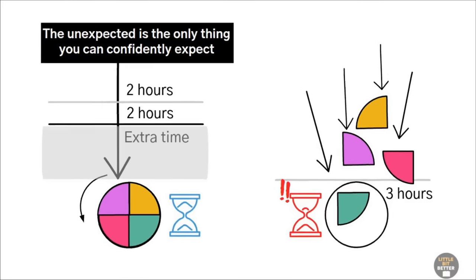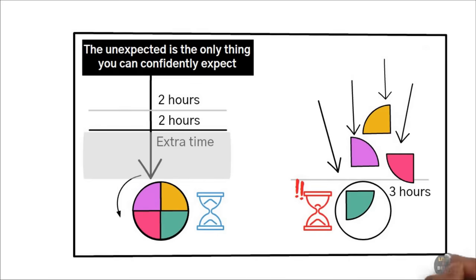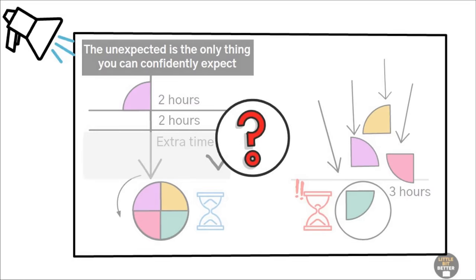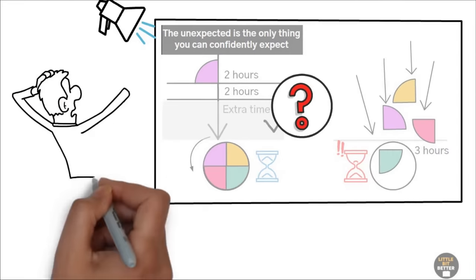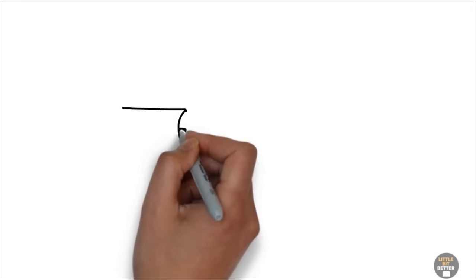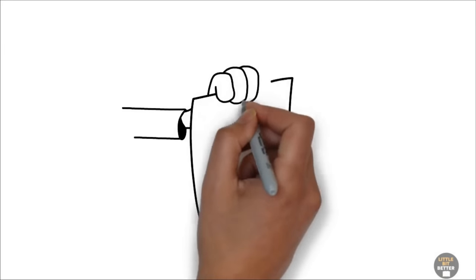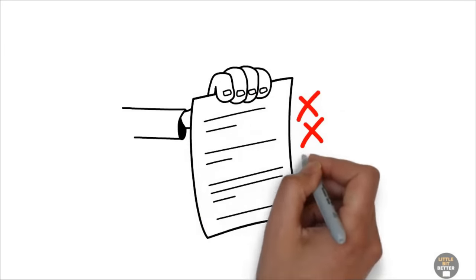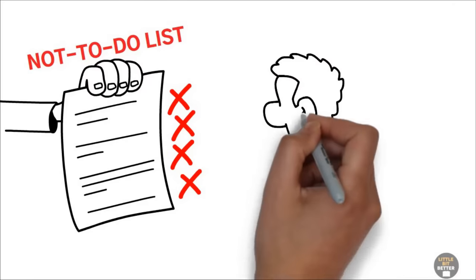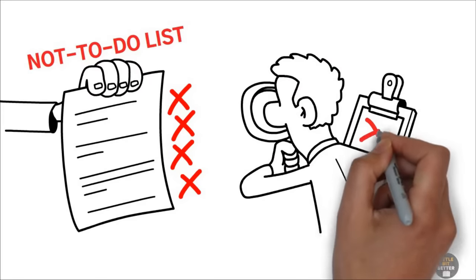At this point, you might say, okay, I heard enough. Do one thing at a time, go slow, and leave some time for unexpected events. But how? How do I do it when I have so much work on my to-do list? Here is how effective people do it. Effective people are masters at creating a stop-doing list, which you can also call a not-to-do list. They are merciless at identifying and removing tasks that no longer produce results.